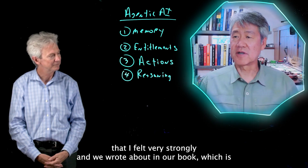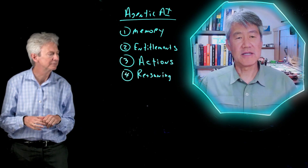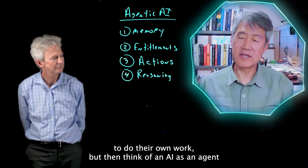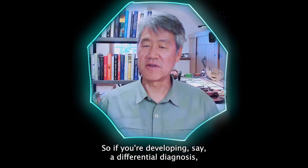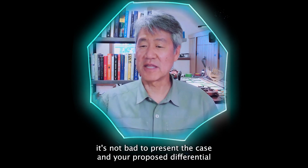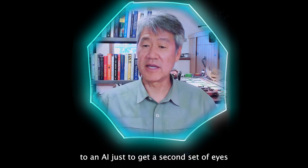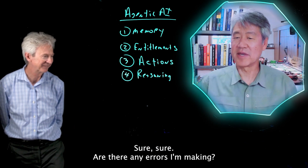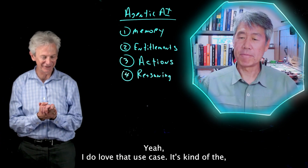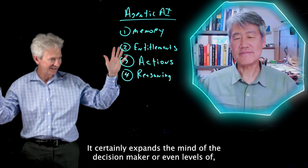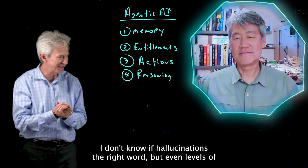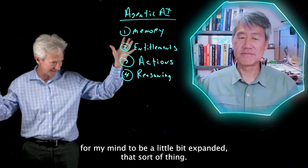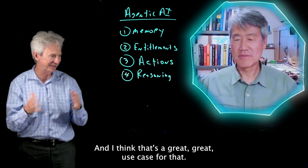These ideas of agentic computing can reinforce the intelligence of other AIs and reduce hallucination rates simply through challenging each other. This leads to something I feel very strongly about and wrote about in our book: I think many doctors and nurses would be well served to do their own work, but then think of an AI as an agent that can be a second set of eyes. If you're developing a differential diagnosis, it's not bad to present the case and your proposed differential to an AI and ask specifically, is there anything I've overlooked? Are there any errors I'm making? Even some level of being a little bit wrong doesn't harm this use case, because you're just asking for your thinking to be expanded.